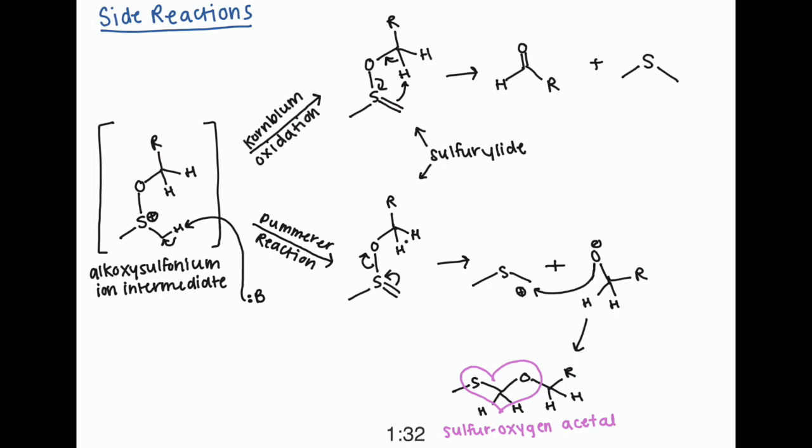At the bottom, the Pummer reaction proceeds a bit differently. So the ylide kicks off the alkoxysulfonium ion, which then attacks that electrophilic carbon to form this sulfur oxygen acetal. The alkoxysulfonium ion attacking the carbocation actually looks pretty similar to a Wittig reaction. So that should look familiar.